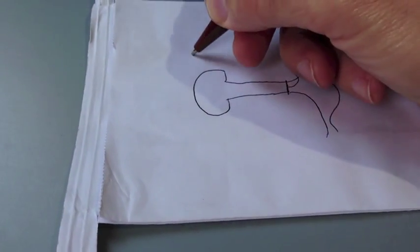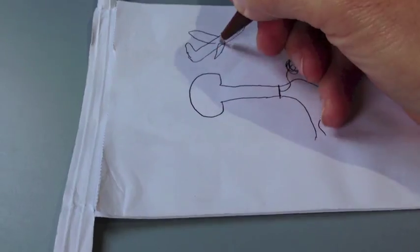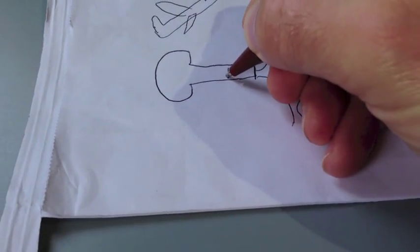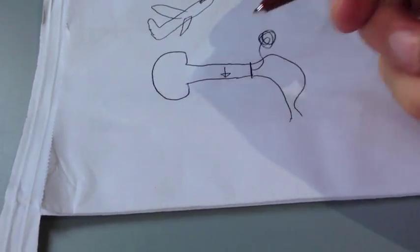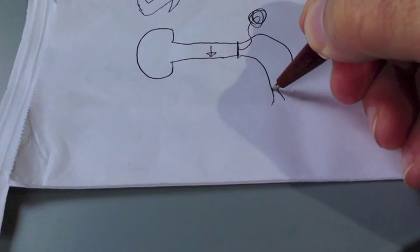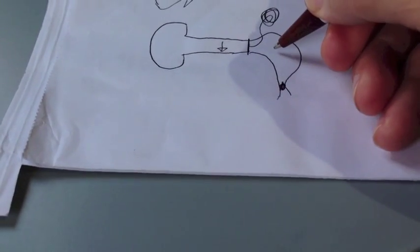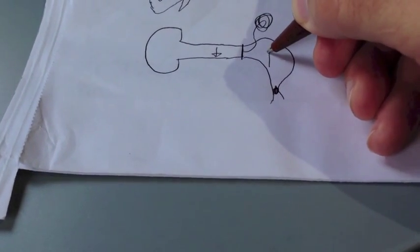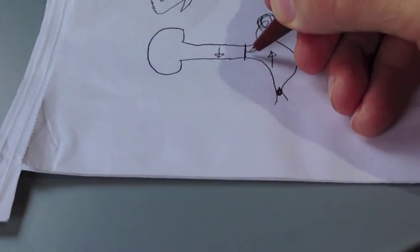Now when the plane starts to ascend or go up, the overall air pressure decreases, which causes less pressure in the ear canal. Since my eustachian tube is clogged with my ear infection, the pressure can't equalize, so there's relatively high pressure in the inner ear.